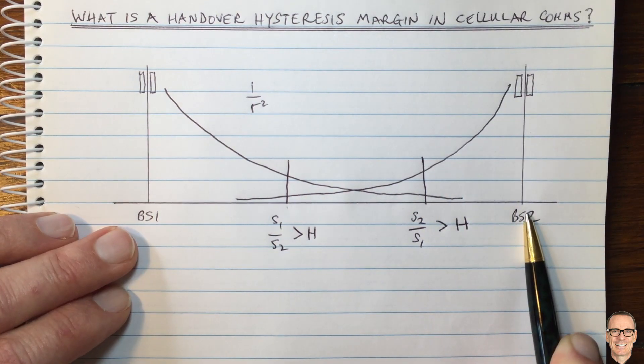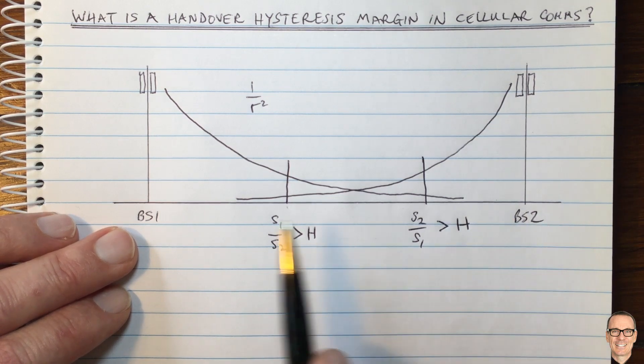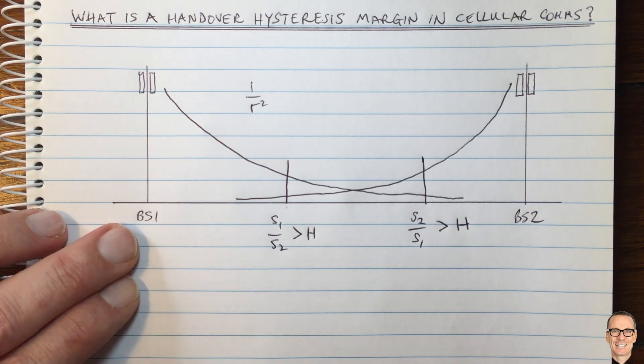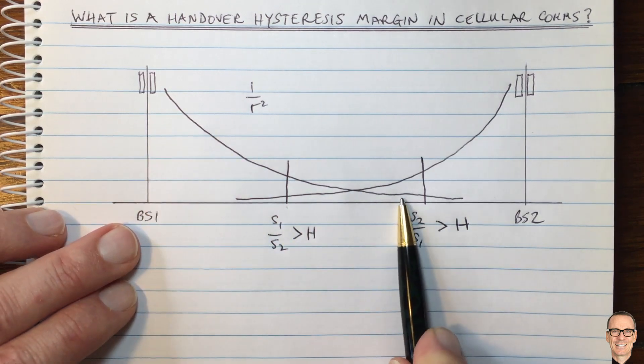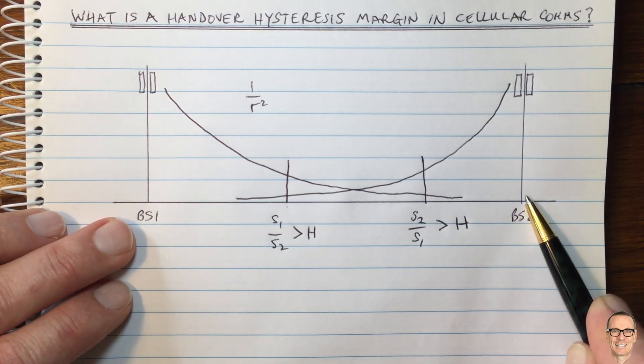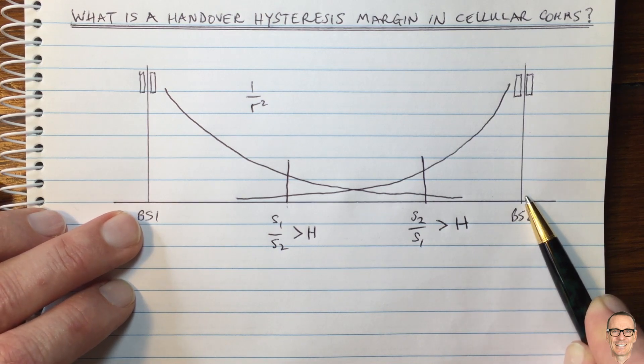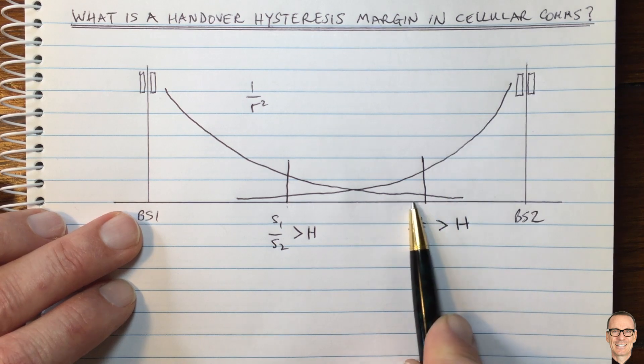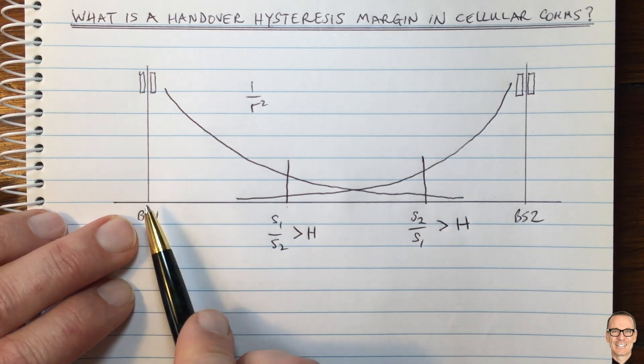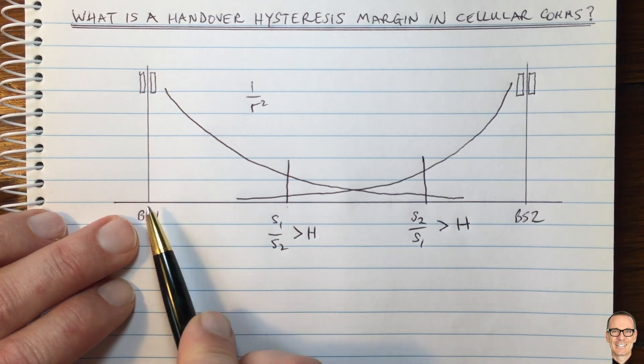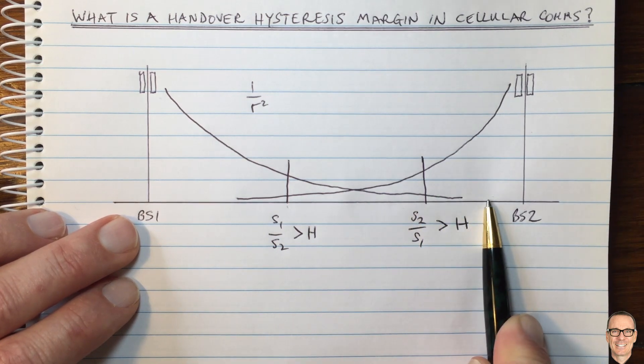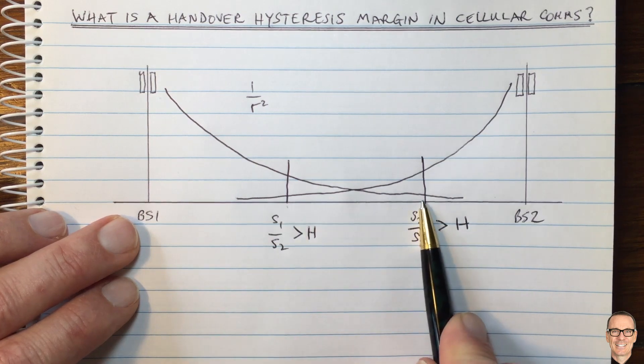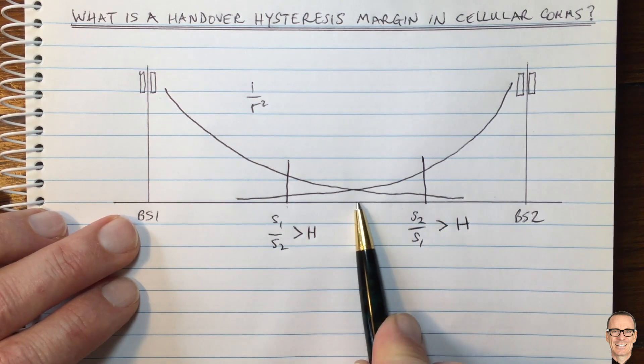And of course, it's important to realize that there are backhaul implications from any handover scenario because the data, if you're thinking on the downlink, the data that is coming to you needs to be being sent to both base stations through the backhaul network so that you can do a smooth handover from one to the other. And at some point, you'll stop, the network will stop sending data to base station 1 after you've handed over when it's confident that you're not going to be coming back into base station 1 and ping-ponging.